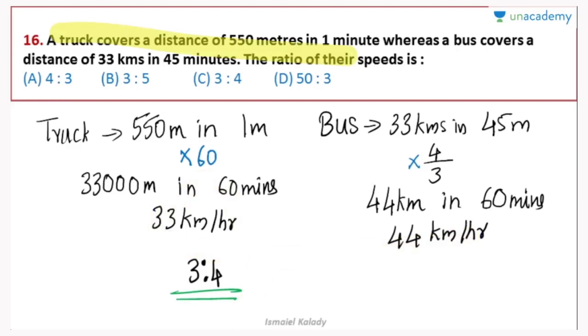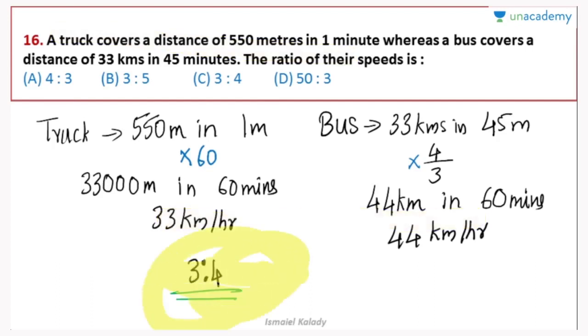So the truck-to-bus speed ratio is 33 to 44, which simplifies to 3 is to 4. Next question.